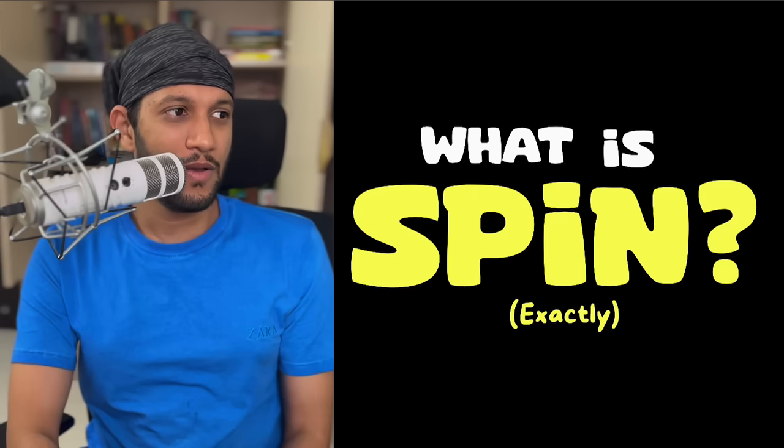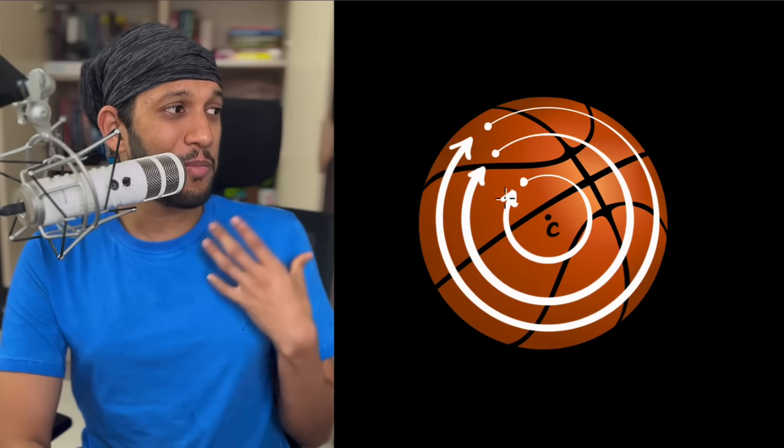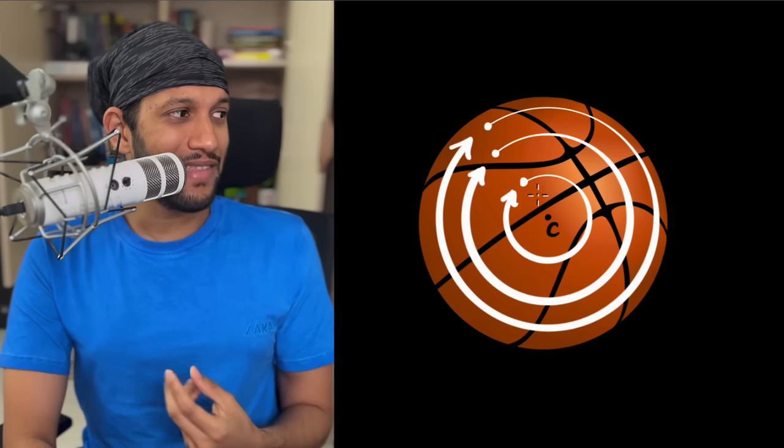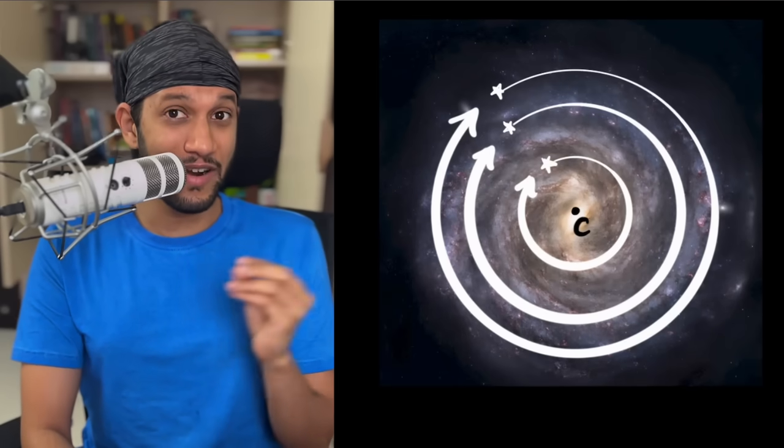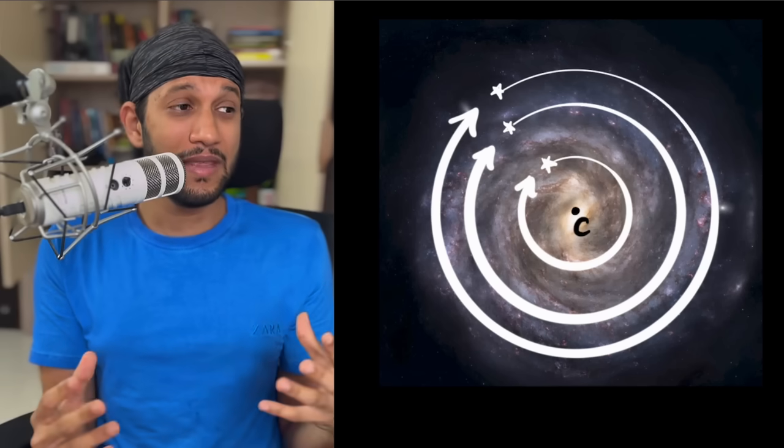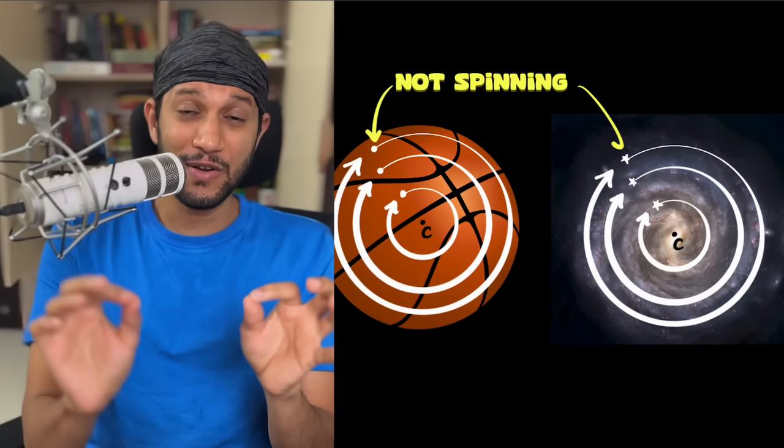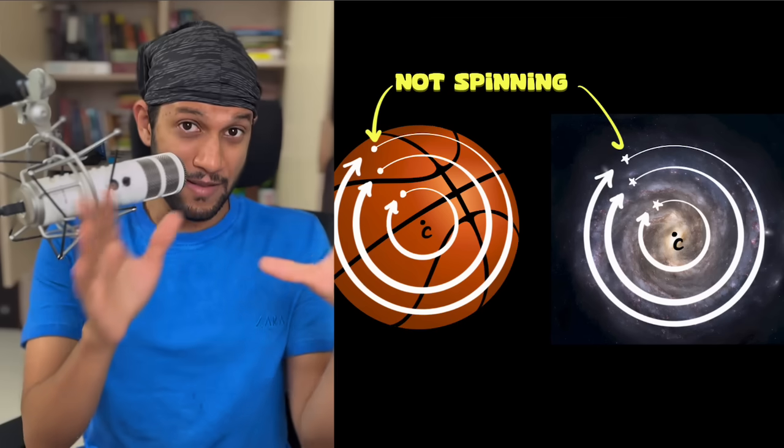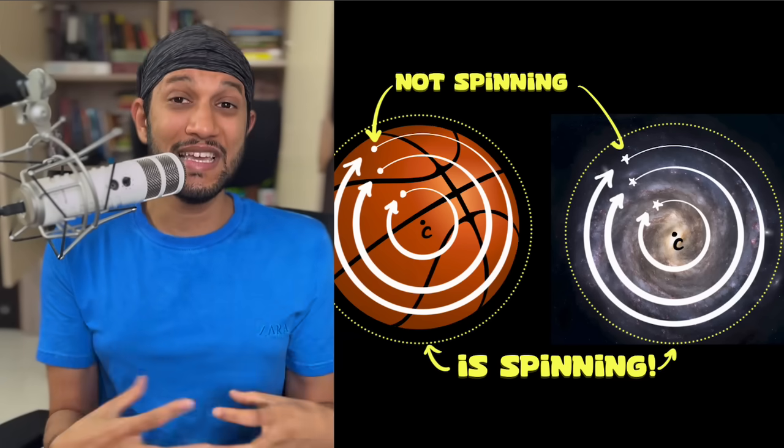But Feynman would remind us that we're talking about science, so we need to be very precise about our definition. So what exactly is spinning? Well, when you consider a spinning basketball, what's happening is that every single particle of that basketball is moving in a circular path along a common center, and they all take the same time to finish the circle.